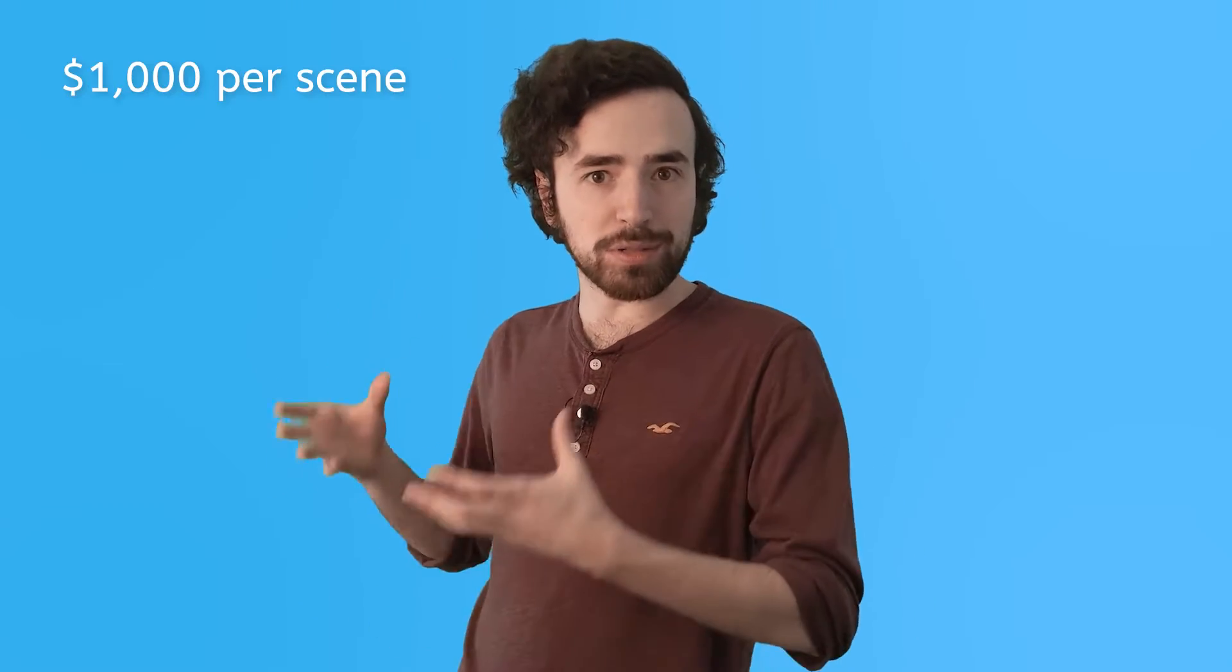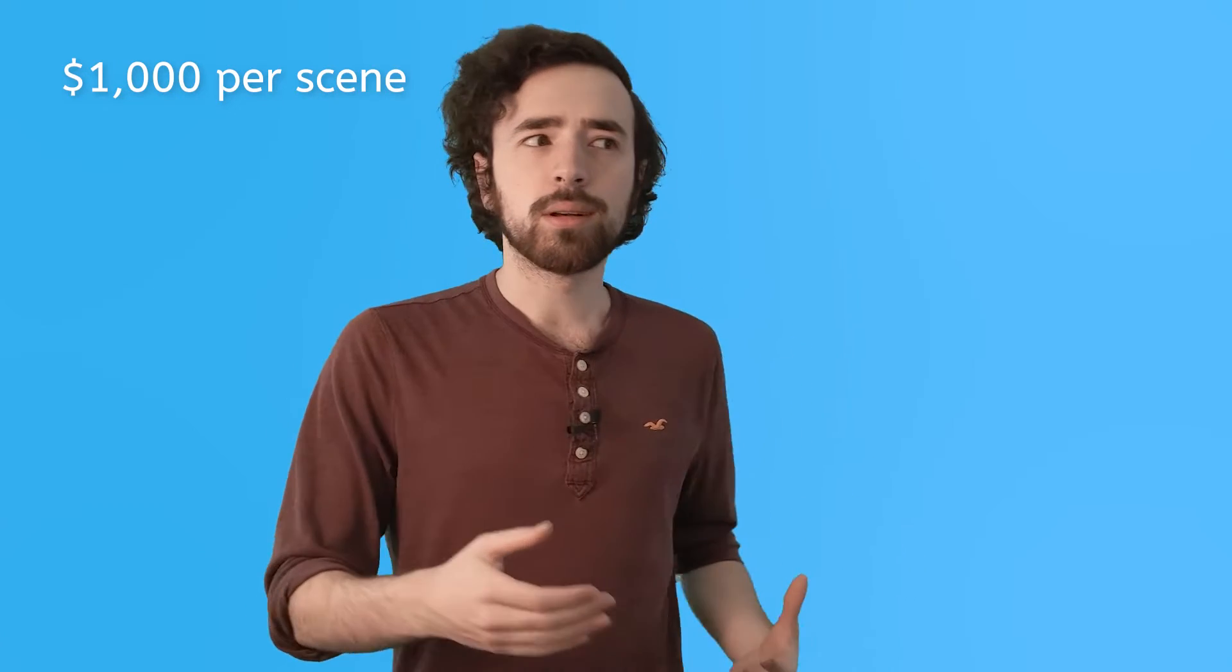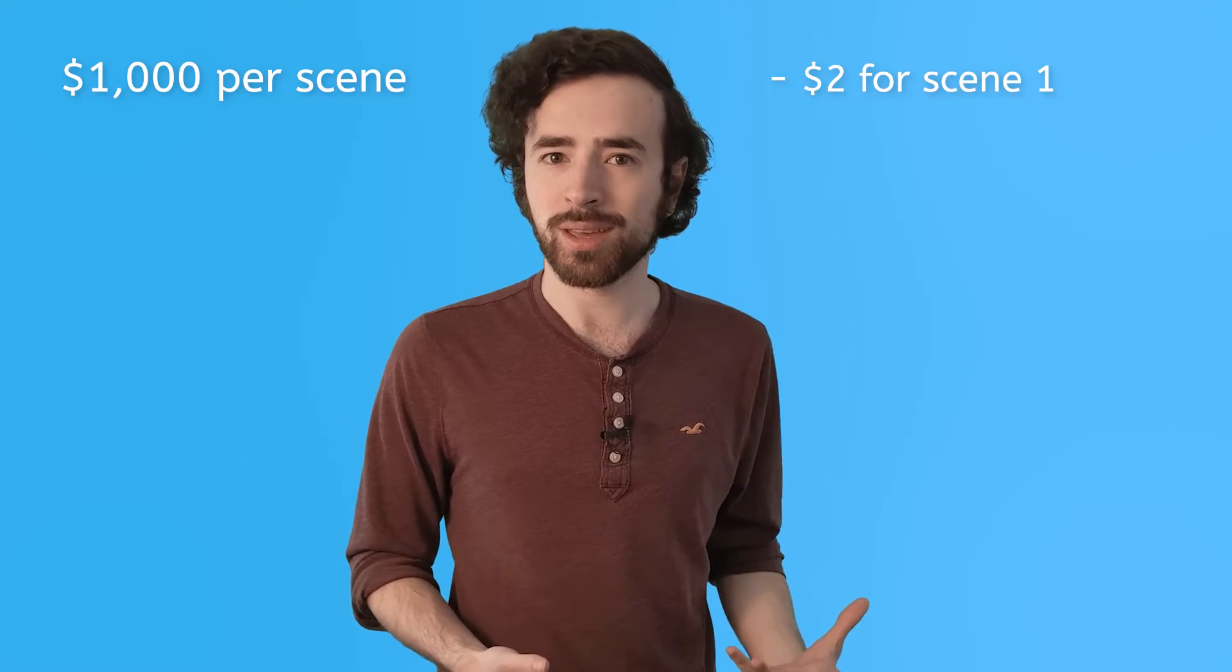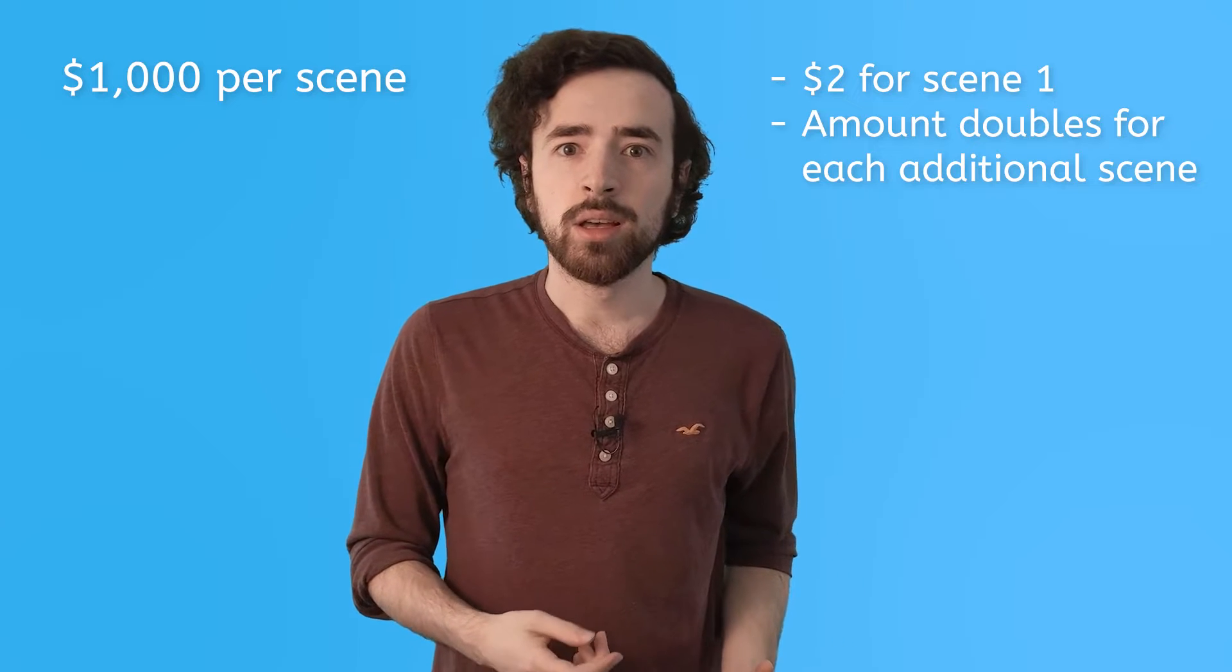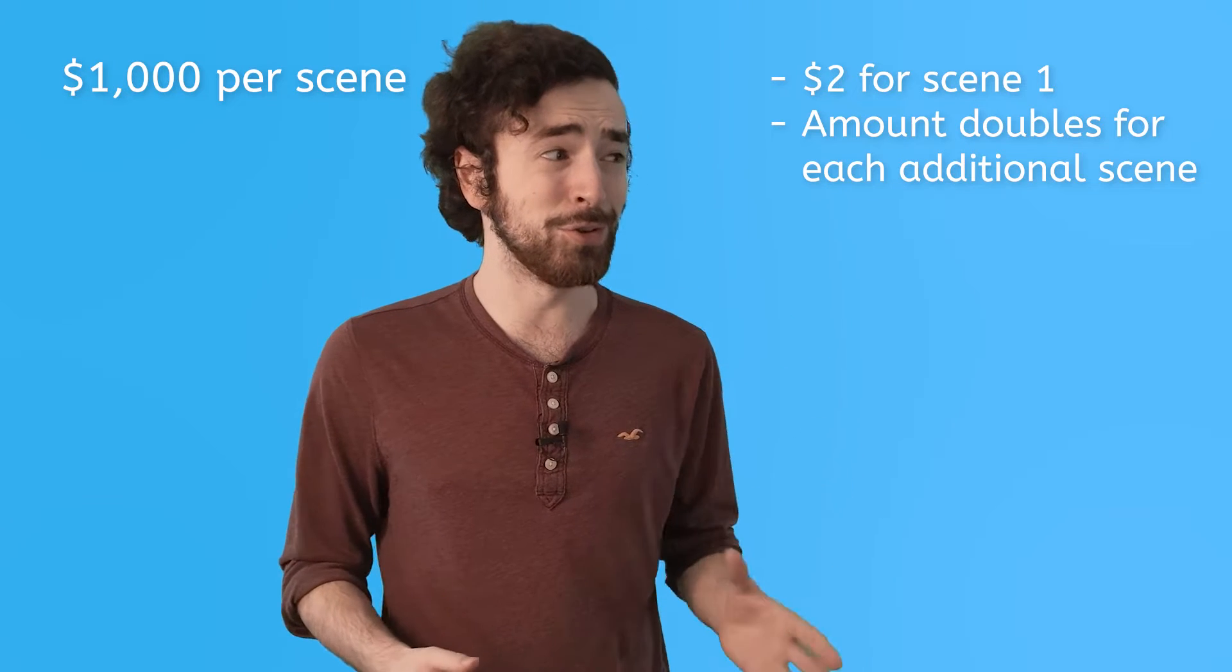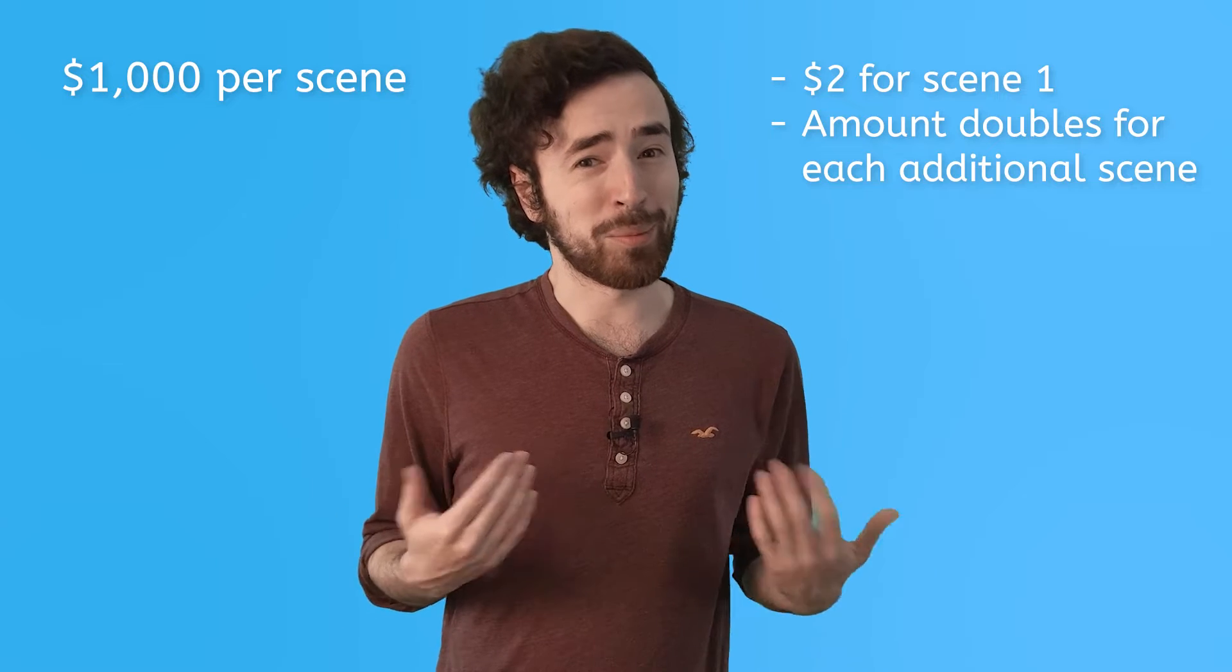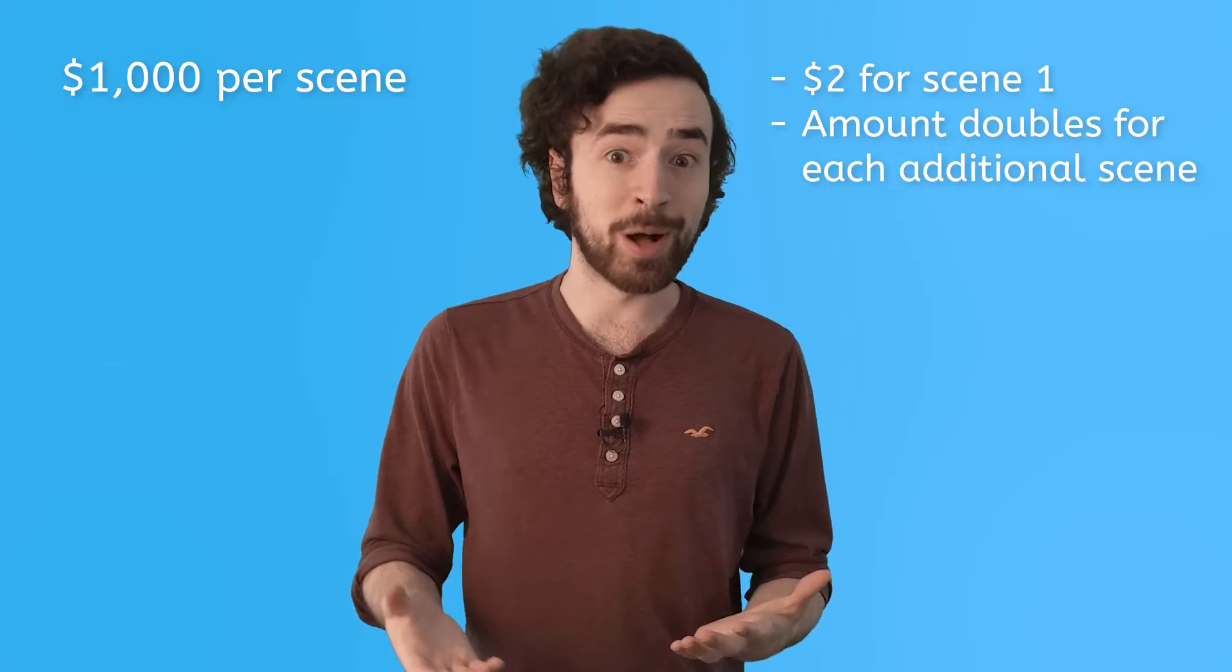The production company says that they can either pay me $1,000 for every scene I film, or they pay me $2 for the first scene and then double that amount for every additional scene I film. So which contract do you think is better? I mean, $1,000 is a lot of money and starting me off at $2 for one scene, that kind of sounds to me like they don't know what I'm worth. But hey, I figured that math could really help us here.